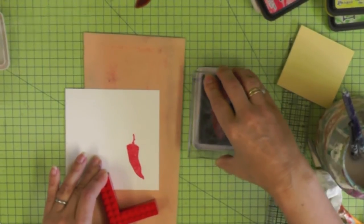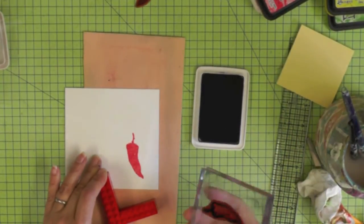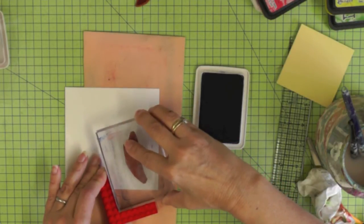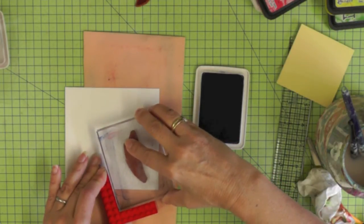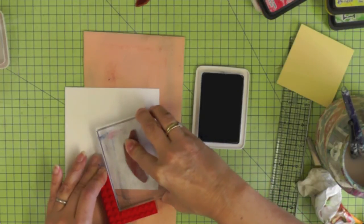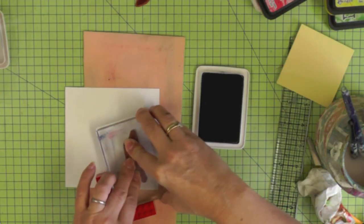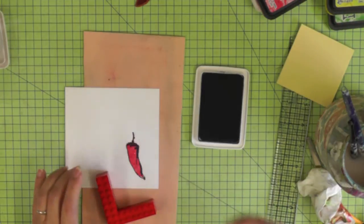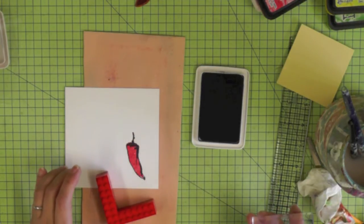I'm inking up my stamp with one hand and holding onto the L-shaped piece of Lego with the other and then again before you press down nestle that acrylic block into your piece of Lego and push down. At this point you can let go of your Lego and you should be able to lift up your stamp and reveal a perfectly outlined chili. Phew!